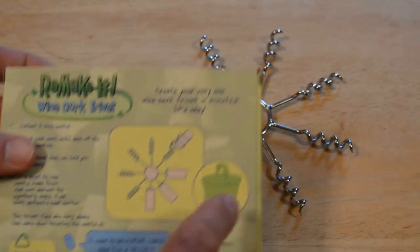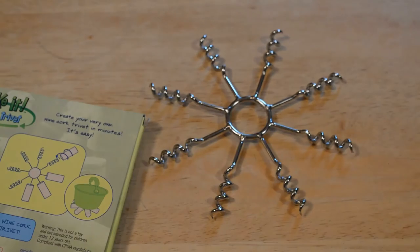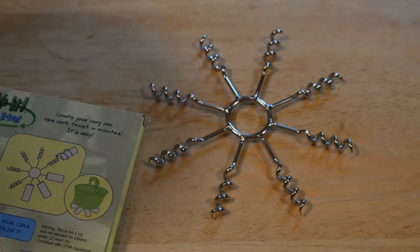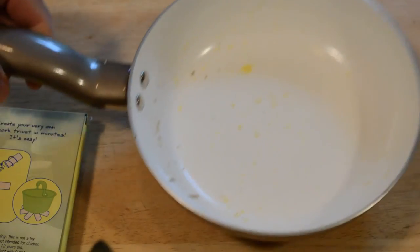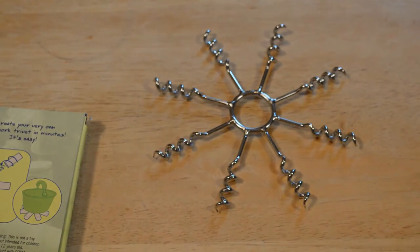Next time you have a hot pot or hot pan, the corks will protect your countertops and you can set your pan or pot on the trivet.